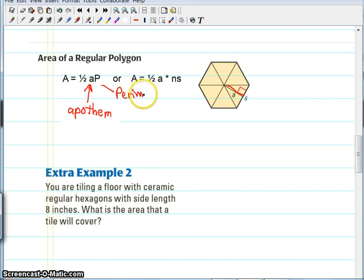Perimeter is the length all the way around the outside of the polygon, so we have an alternative version of this formula right here, where perimeter has been replaced with two other letters. N is the number of sides of the polygon, and S is the side length. So one way to find perimeter is to multiply the number of sides times the side length, and so that will give you the perimeter.